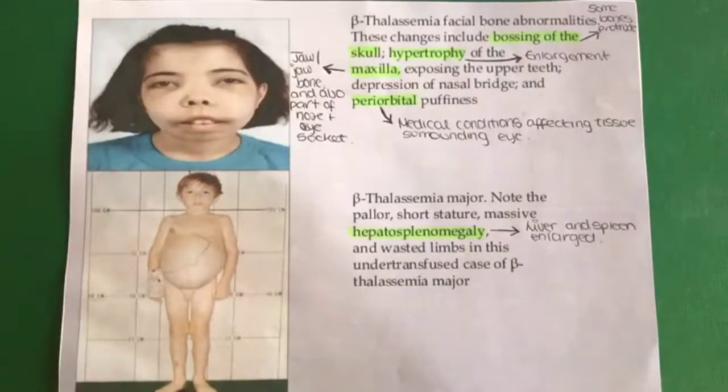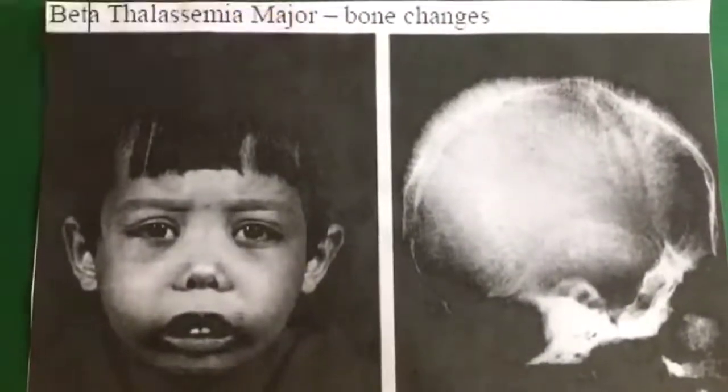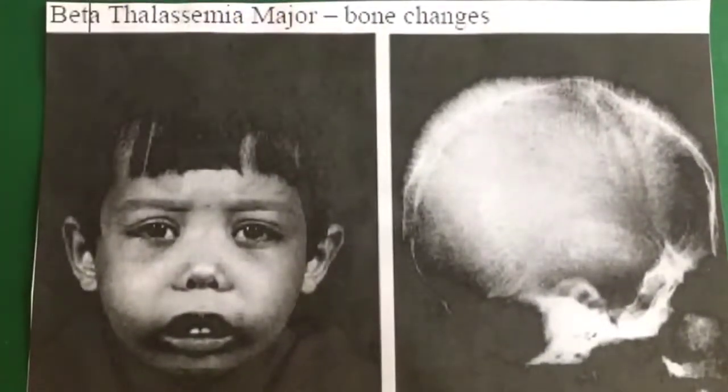Thalassemia can affect growth, as the children may not gain weight or grow due to misshapen bones, and may even experience delayed puberty. The visual symptoms are yellowing of the skin and whites of the eyes, also known as jaundice. Internally, people affected will have an enlarged spleen, liver and heart.